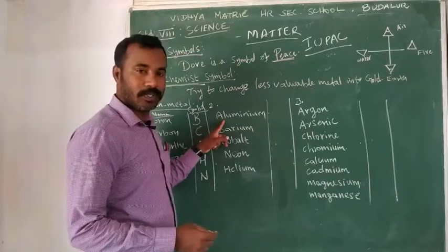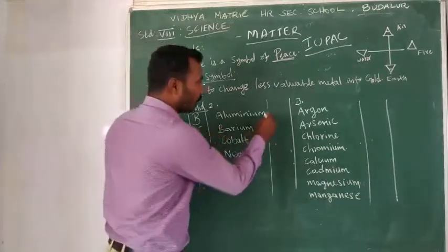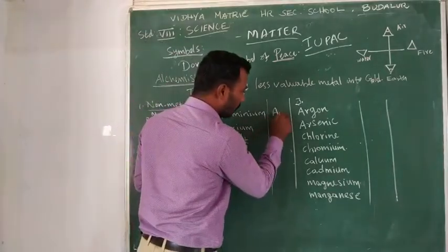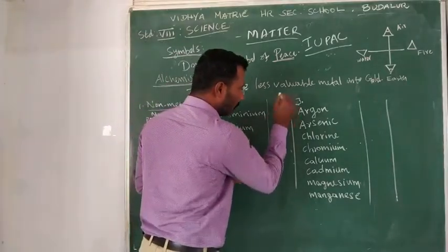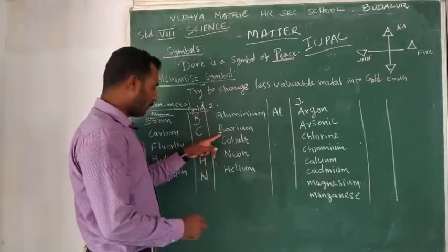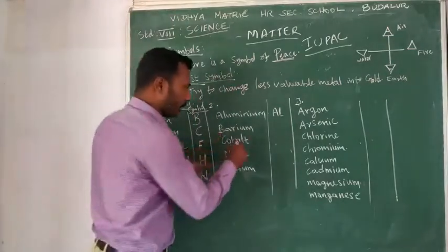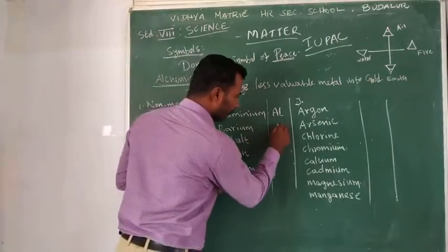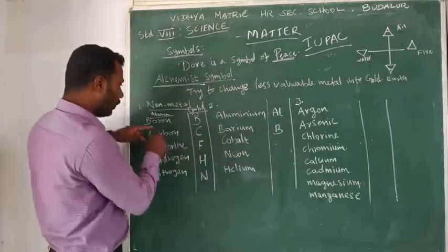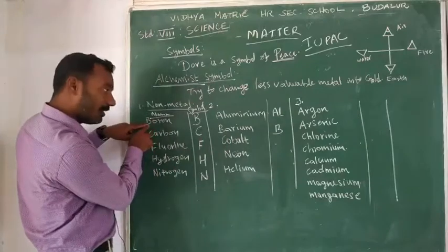For example, aluminium — Al, barium — Ba, boron — B.